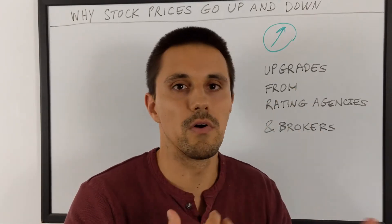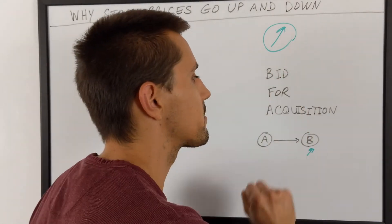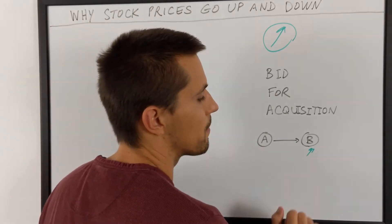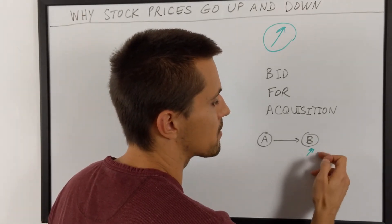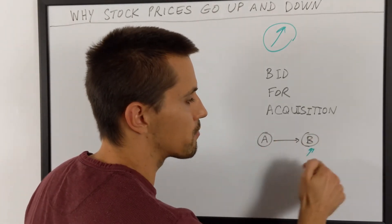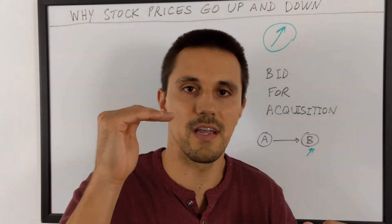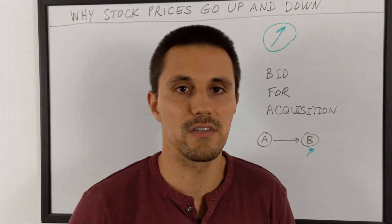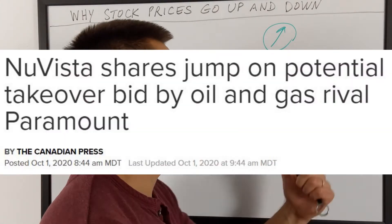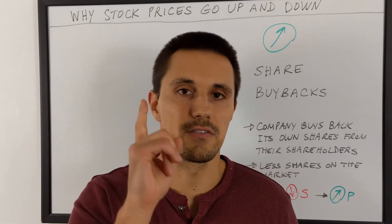Another reason why a stock can jump up pretty high is when there is a bid for acquisition. Imagine a big competitor, Company A, wants to buy Company B — the stock price of Company B will rise sharply. Why? Because investors know that Company A will probably overpay. They will not pay the market price of ten dollars per share, but probably 12 or 13 dollars, because they want to acquire all the shares of the company. This is usually the reason why a bid for acquisition leads to higher stock prices.